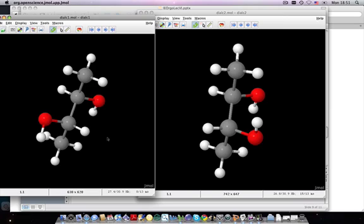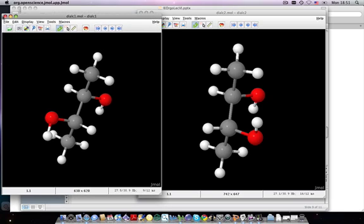They're stereoisomers. They have the same connectivity, right? Carbon is connected to carbon, oxygen, hydrogen, carbon, oxygen, hydrogen, carbon, etc. What they differ in is the shape of the molecules, and that's sort of the key here.